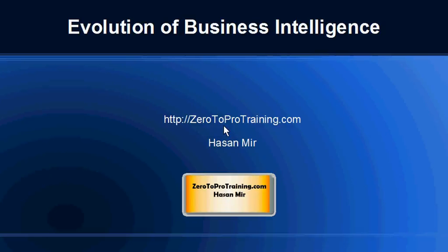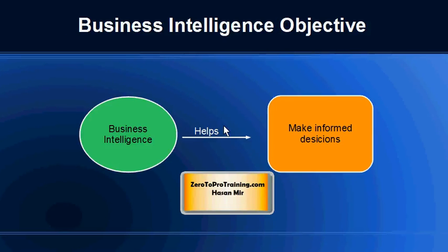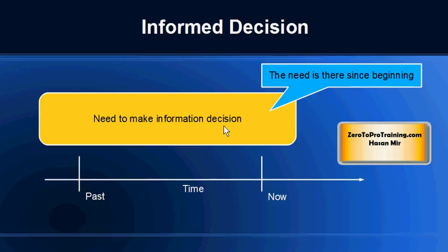Hello, in this session we will talk about the evolution of business intelligence. This is Hassan Mir from Zero2ProTraining.com. The objective of business intelligence is to help you make informed decisions. The need to make an informed decision is not something new that emerged recently — this need has been there since the beginning of time.